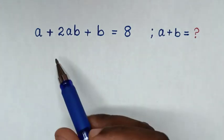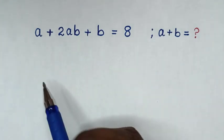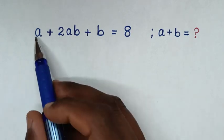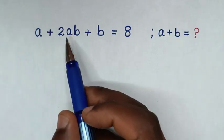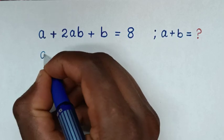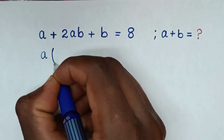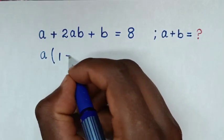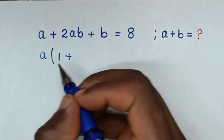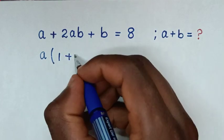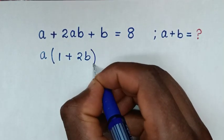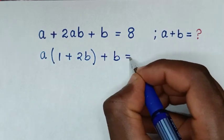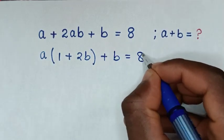So in the first step, from this problem, in here a + 2ab — a is common. So we will take a out of the bracket. a divided by a is 1, then plus 2ab divided by a is 2b, bracket, then plus b is equal to 8.